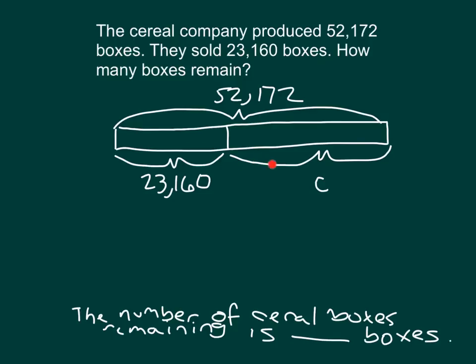Let's write a focused answer here. The number of cereal boxes remaining is blank. And I'm going to label it boxes as well. So how is it that I solve for this number here? It is going to be a subtraction problem where I will take that amount of fifty-two thousand one hundred seventy-two and subtract twenty-three thousand one hundred sixty. Would I be able to do my subtraction here, two minus zero, without a regroup? Yeah. Seven minus six? Yes. One minus one? Yes. Two minus three? Oops. That's where I'm going to need a regroup. I can't take away three from two.